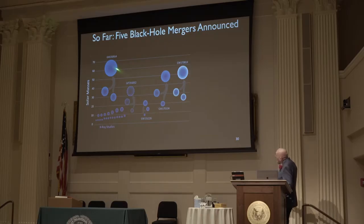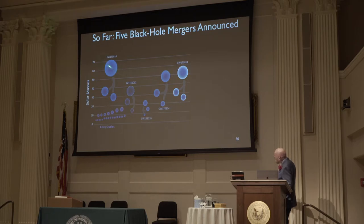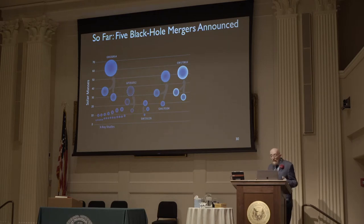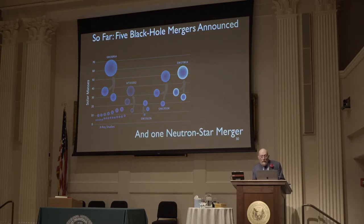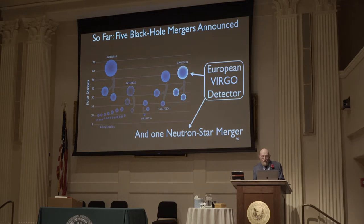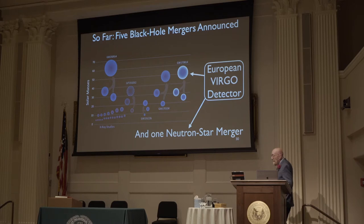By now, five black hole mergers have been announced by LIGO — there are more, and more will be announced in the not-too-distant future. The original event had black holes of roughly 30 solar masses merging to form 63 solar masses. We're beginning to get statistics on black hole mergers. We have seen one merger of two neutron stars, which I'll return to fairly quickly. We have now been joined by the European Virgo gravitational wave detector, which gives us much better angular resolution on the sky.